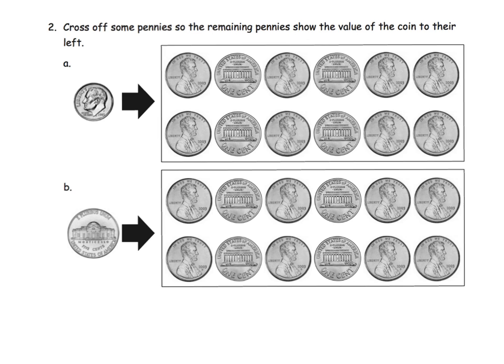So the previous slide, we identified the name of those coins. Now we're going to kind of get to the value of those coins. So it says cross off some pennies so that the remaining pennies show the value of their coins. And so the idea is, what am I going to use here? I'm struggling. Okay, there. So we got our little, there we go. We got our little arrow here.